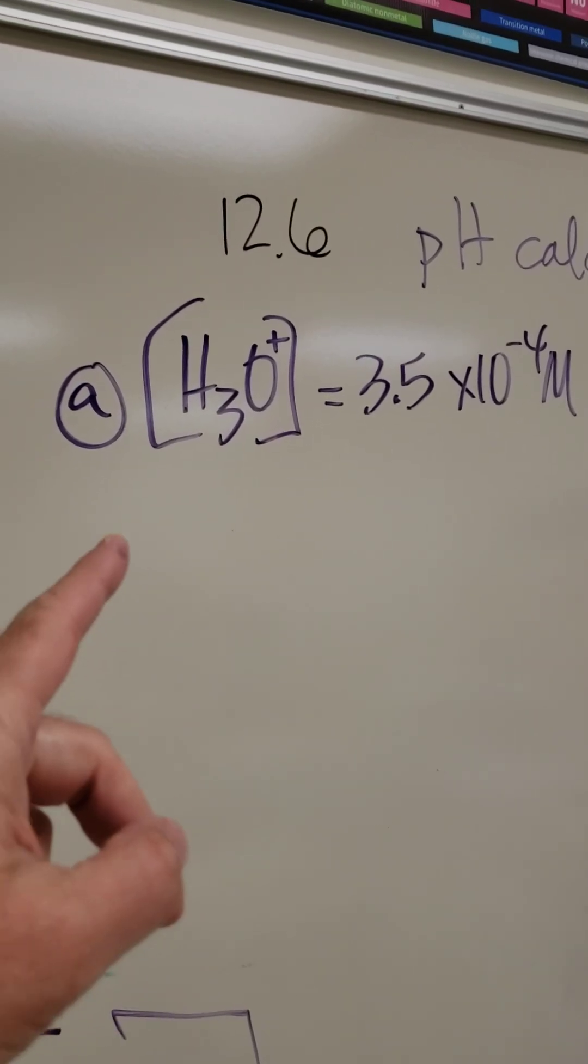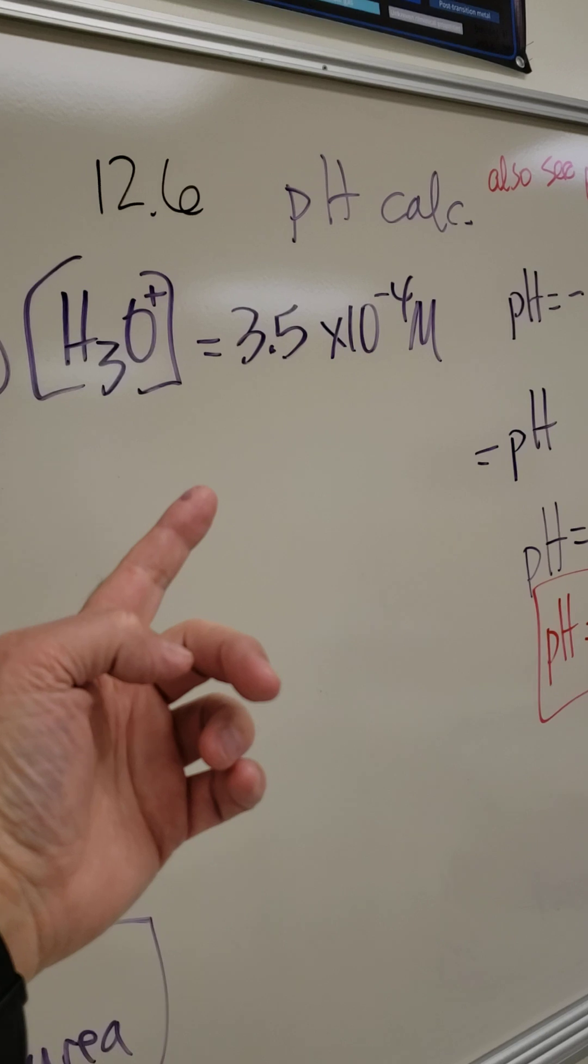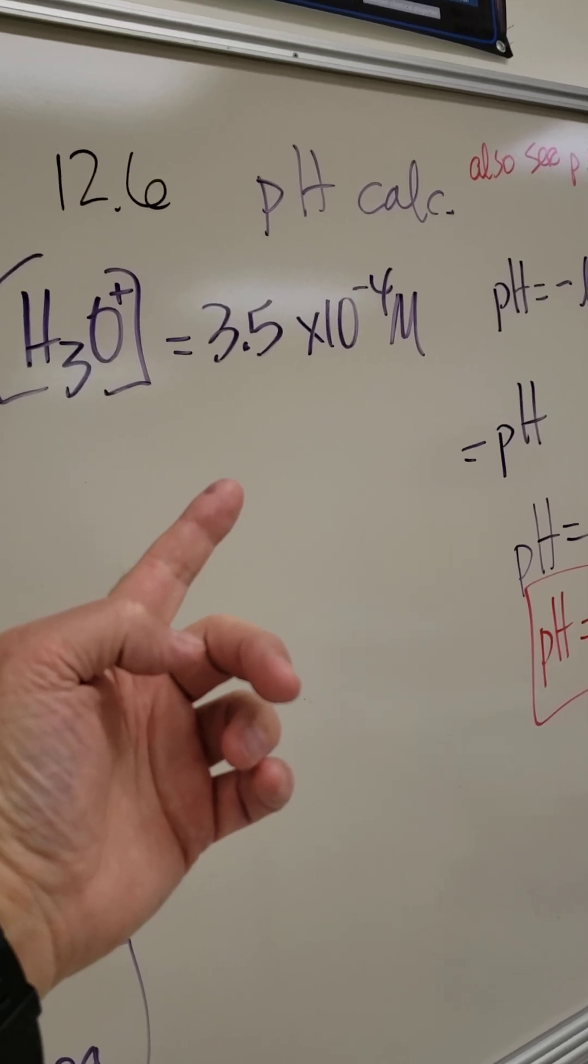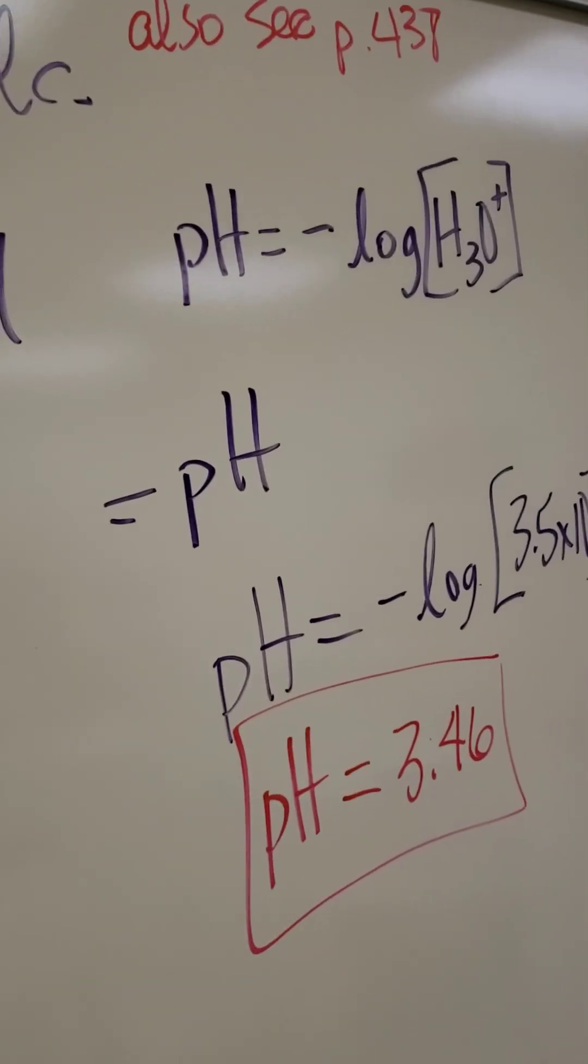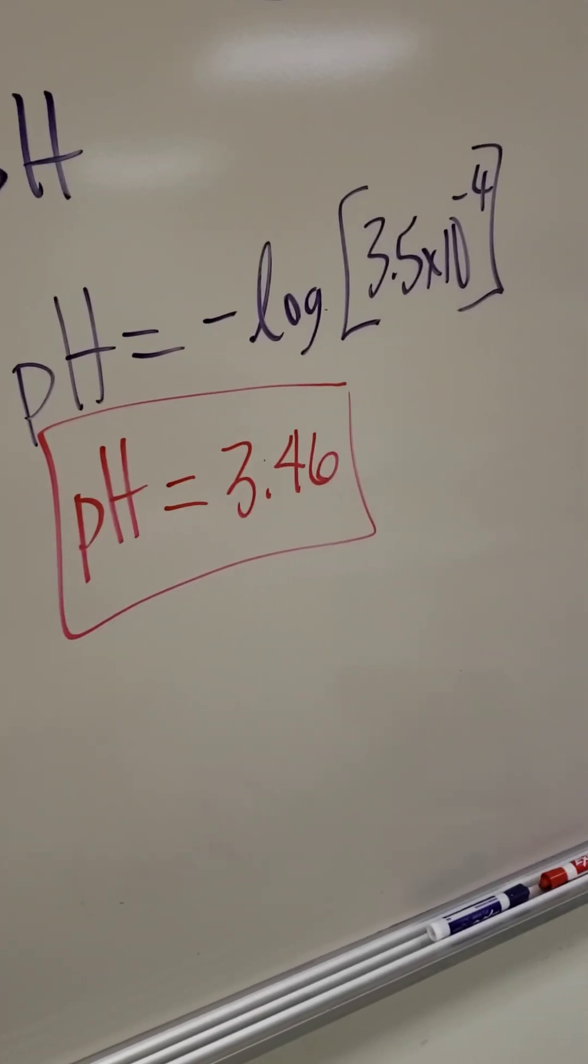We were asked to do a pH calculation when the hydronium ion concentration is 3.5 times 10 to the negative 4 moles per liter. Here's the formula that we use, and this is the basic setup.